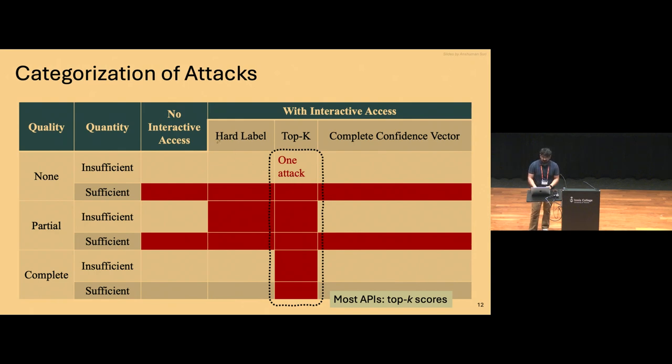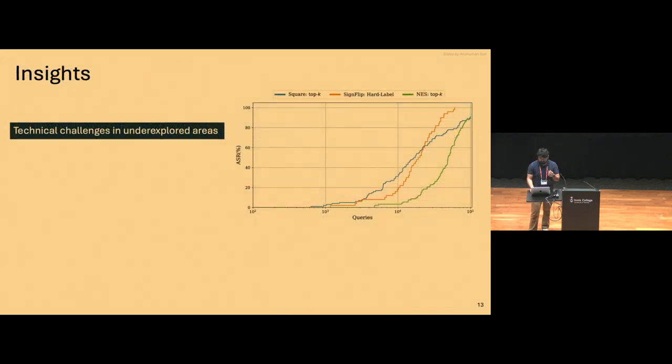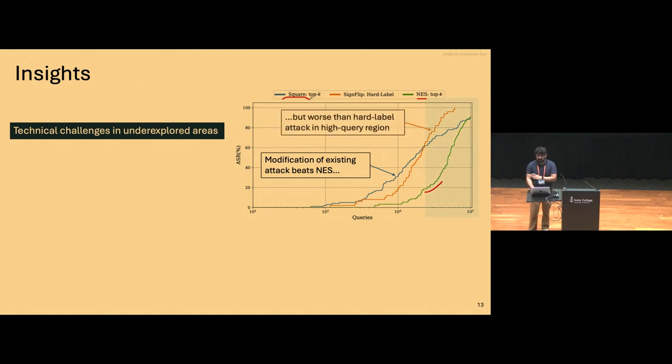Someone could trivially argue that any attack that works in the hard-label setting, by extension, should work in the top-k setting. But of course, if you have access to this additional information, you should be able to do something better, which is exactly what we propose in a simple experiment, where we take the existing state-of-the-art, which is the attack in green over here, for the top-k setting, NES. And what we then do is we take another attack, which is supposed to use all prediction probabilities, which is the square attack. And then we try to modify it very simply, such that it can work in the top-k setting. And what we see is that this very simple modification beats the existing state-of-the-art, at least in the low-query setting. But if you compare this for the high-query setting with another attack that doesn't use the probabilities at all, like the sign-flip attack, it's still not any better. So there definitely is this potential for improving attacks that utilize the top-k prediction probabilities.